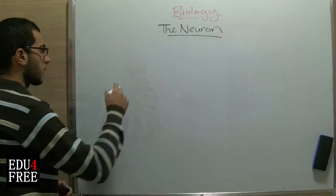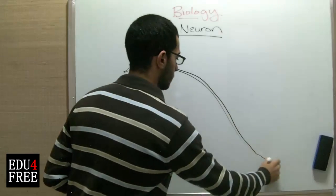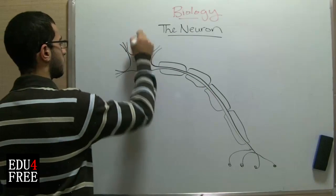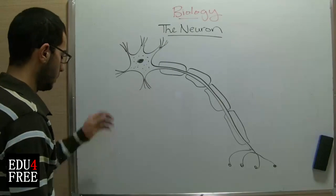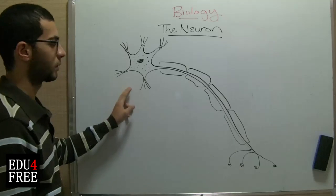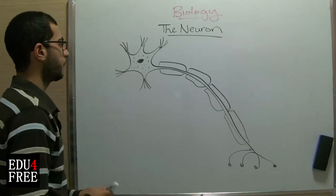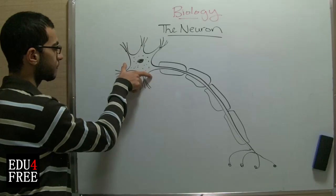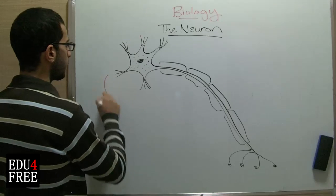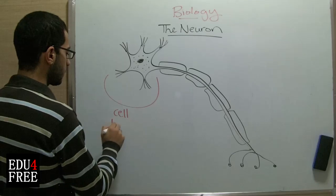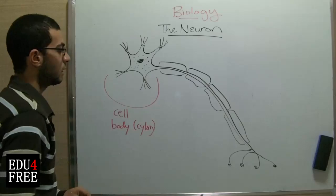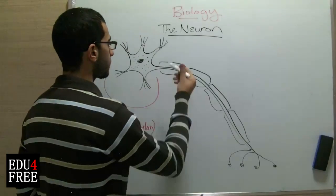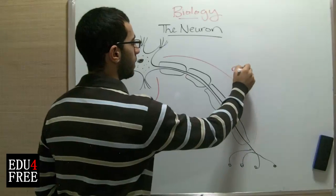So I'm going to draw this. This is what the neuron looks like. Now, we have two main parts in the neuron. The upper part here, which we can call the cell body or the cyton. And the extension which emerged from the cell body or the cyton, and we can call this an axon.